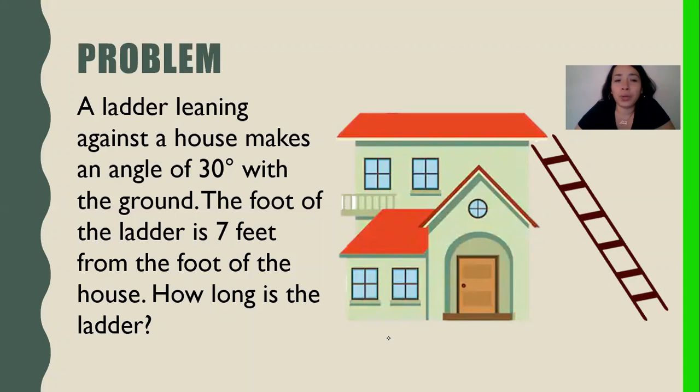Let's think about how we do three reads. The first time I read it, I just look at what is the problem about. In the chat box, once I'm done reading it, type in what the problem is about. No numbers, just quick, what is it about? A ladder leaning against a house makes an angle of 30 degrees with the ground. The foot of the ladder is seven feet from the foot of the house. How long is the ladder?